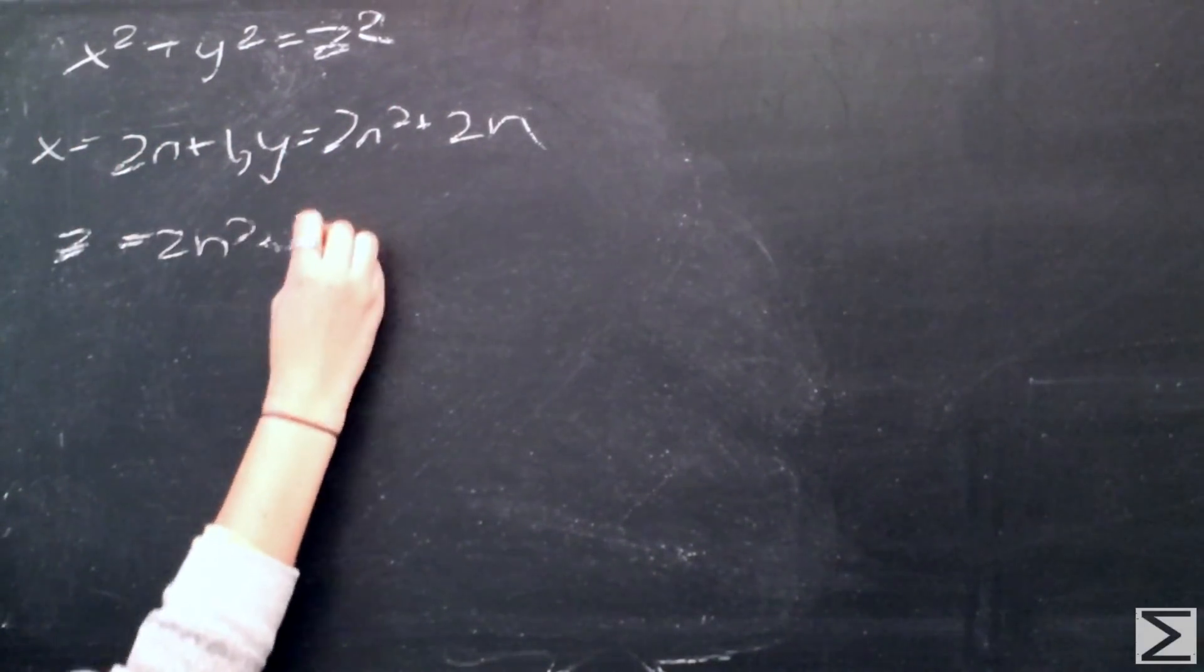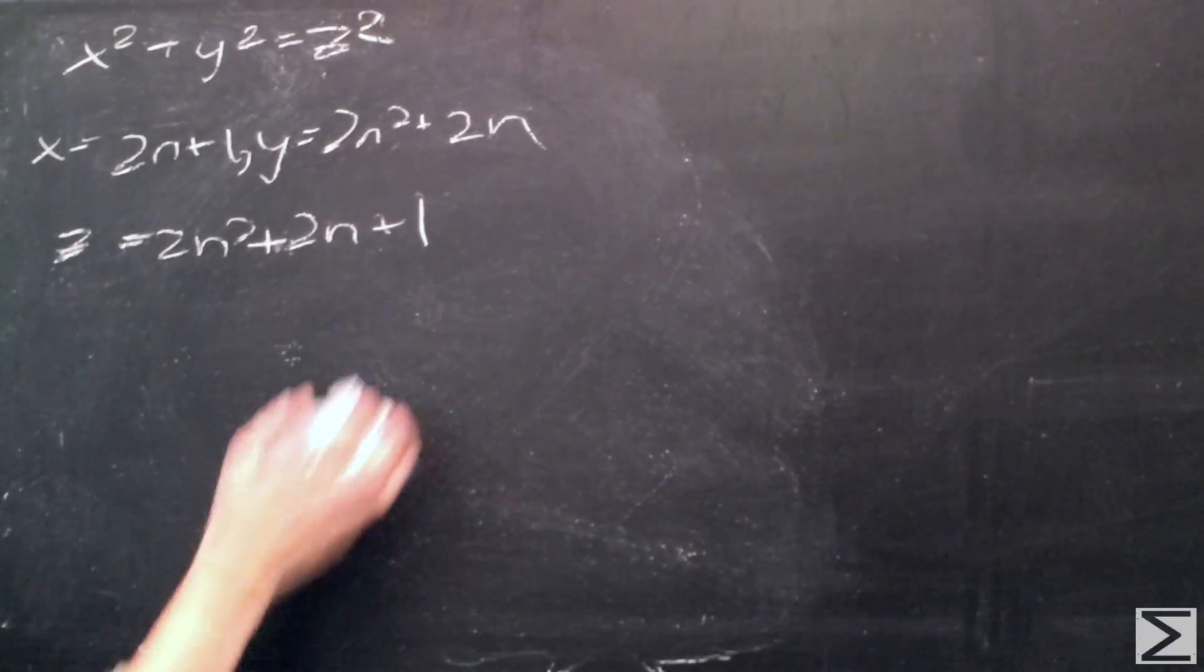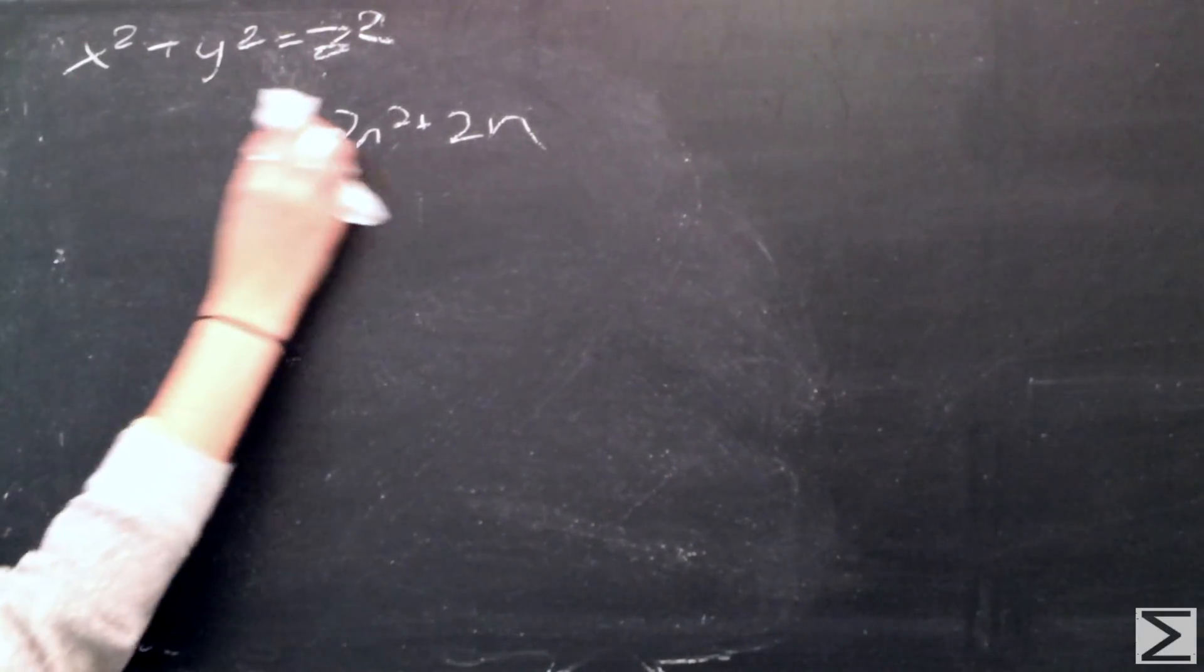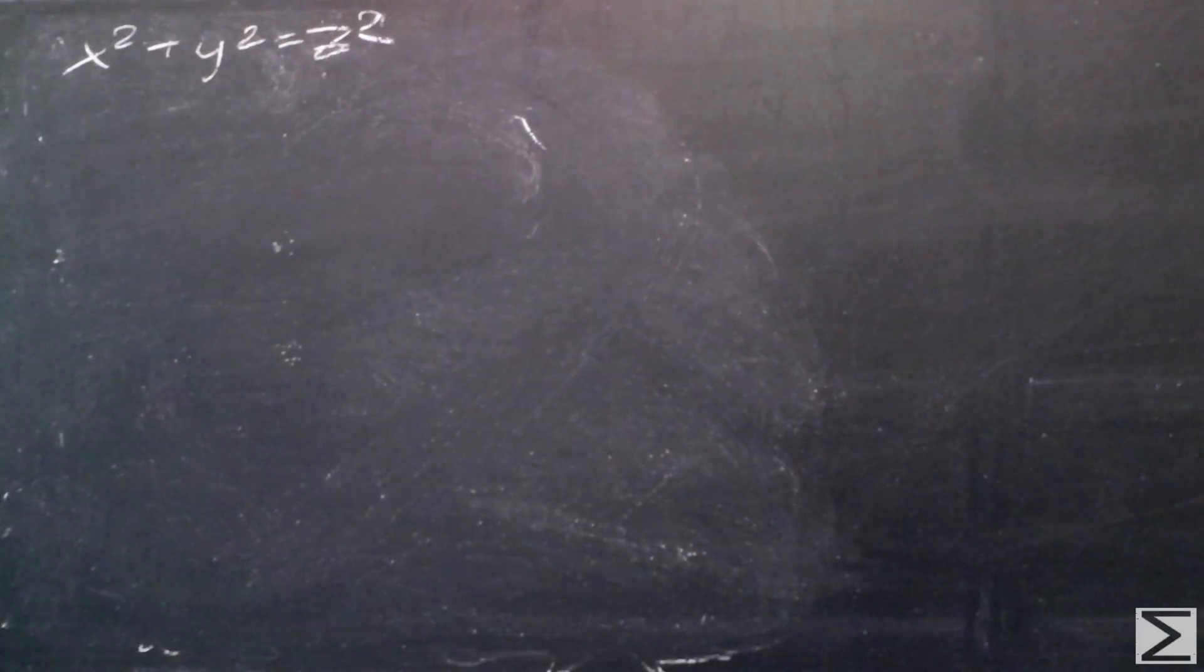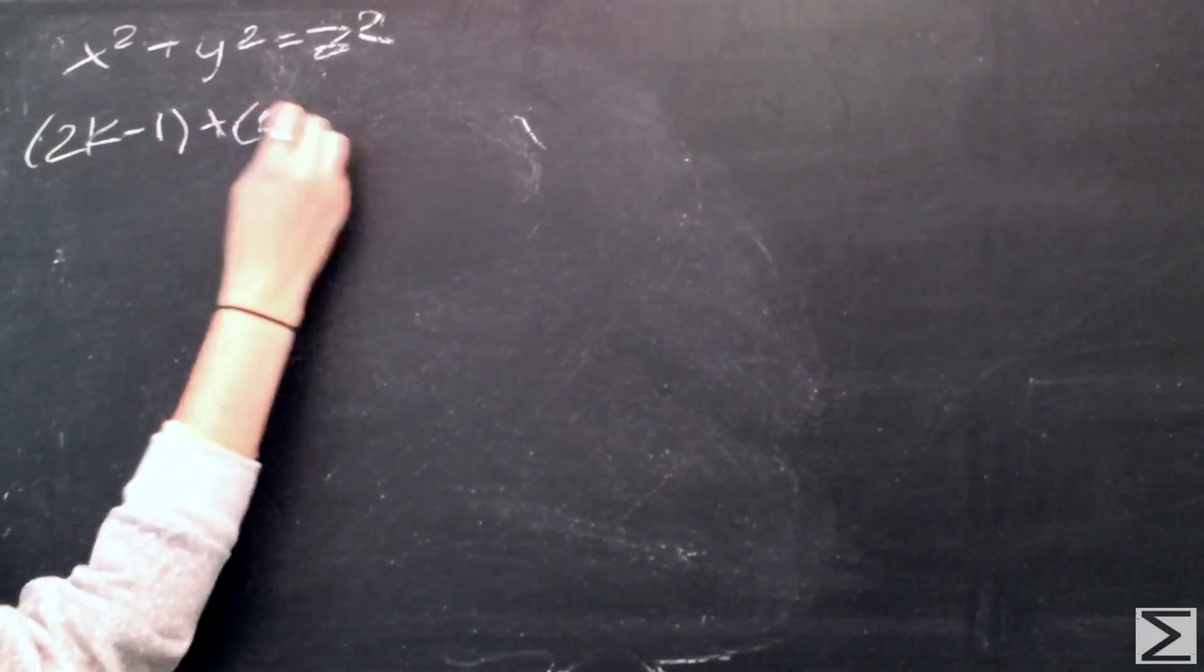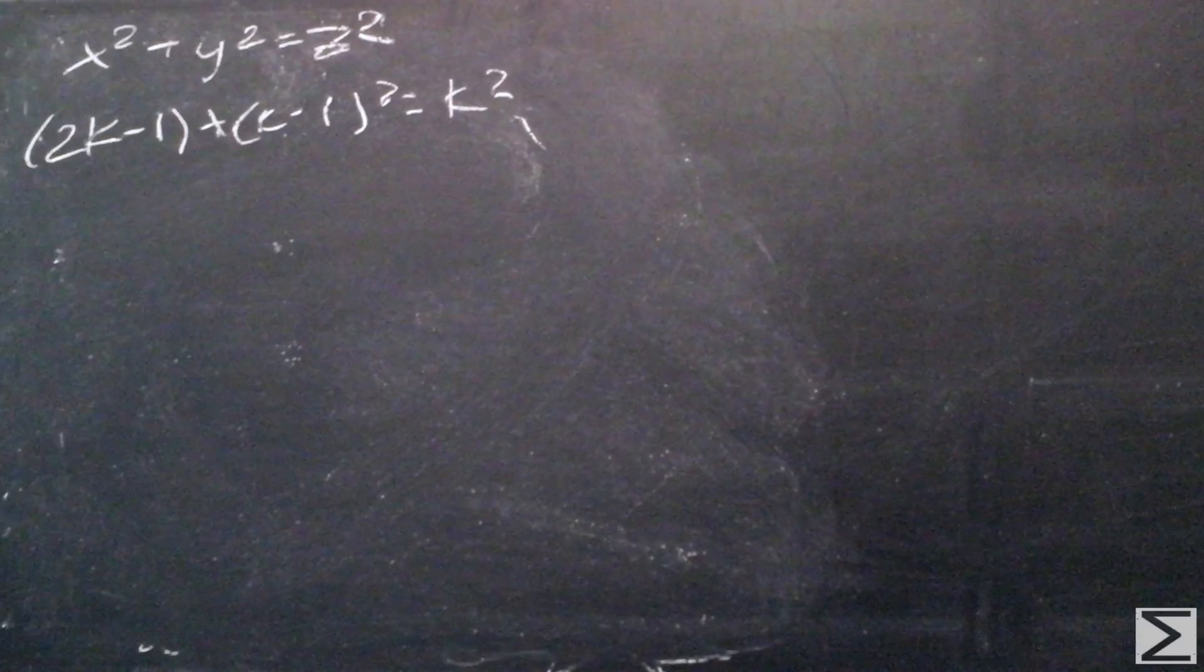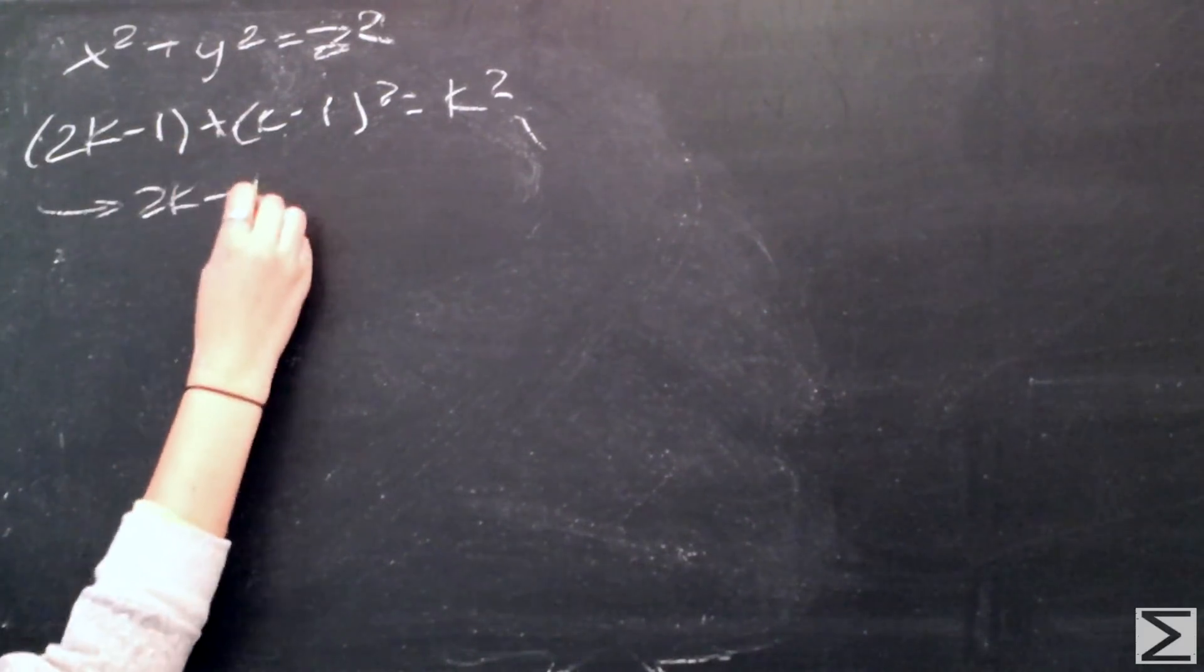Some ancient sources attribute this partial solution to Pythagoras. The solution can be found using an equation that produces a square number from the next smaller square number. We would suppose that 2k minus 1, which represents x squared, is therefore a perfect square, which happens quite a lot.